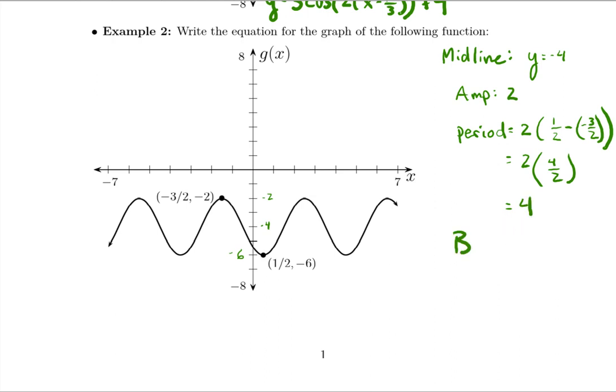So that means b is going to be two pi over four, which is pi over two.